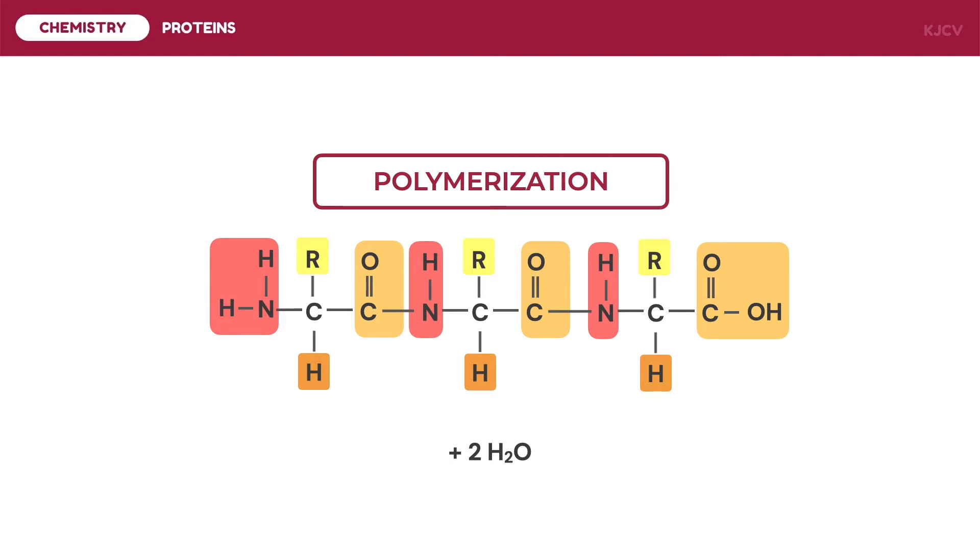The carbon atom of the carboxyl group now forms a bond with the nitrogen atom of the amino group of the next amino acid. The bond formed is called a peptide bond. In polypeptide chains, one end is always the amino group or the N-terminus. The other end is the C-terminus or the end with the carboxyl group.